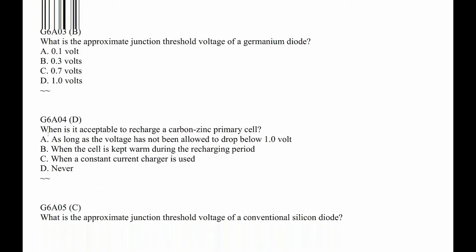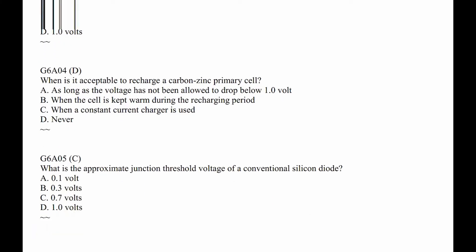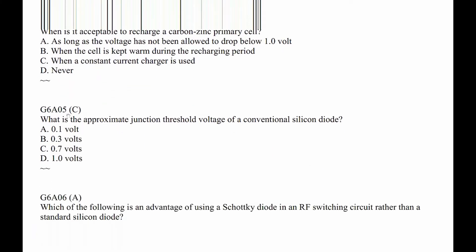G6A04. When is it acceptable to recharge a carbon zinc primary battery? Well, never. You can't recharge it — I think they could blow up. G6A05. What is the approximate junction threshold voltage of a conventional silicon diode? That's 0.7, and that number you sort of need to know if you're doing anything with diodes. So 0.7.